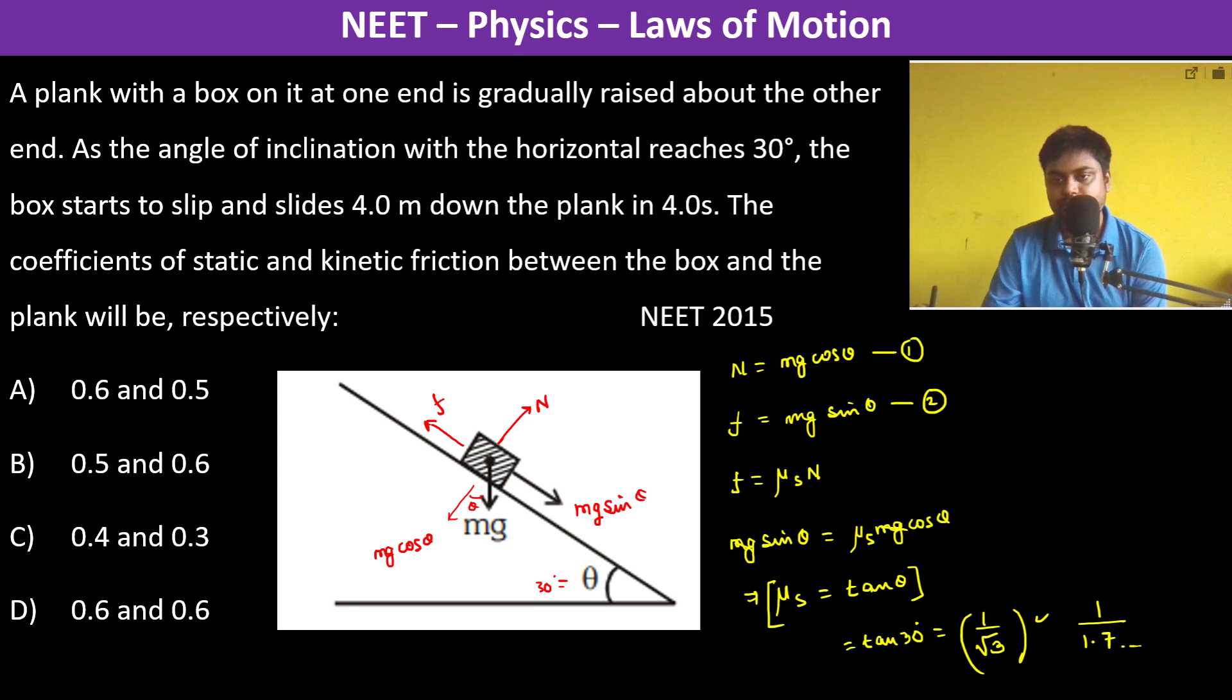So we have 1 divided by 1.7. So 6 into 7 is 42. So almost it's 0.6. So 0.6 is the static friction.